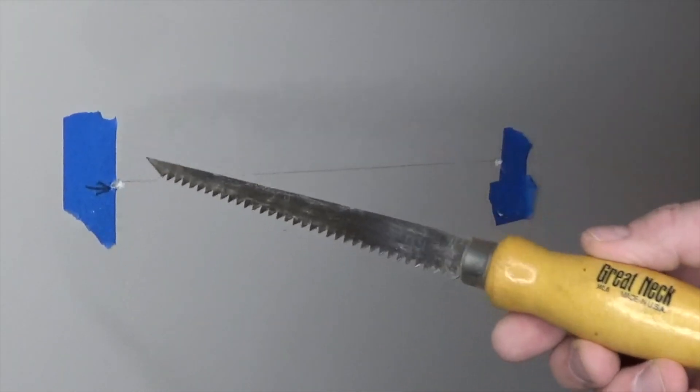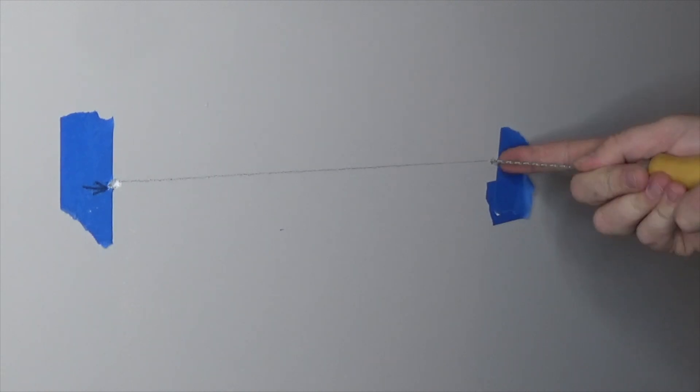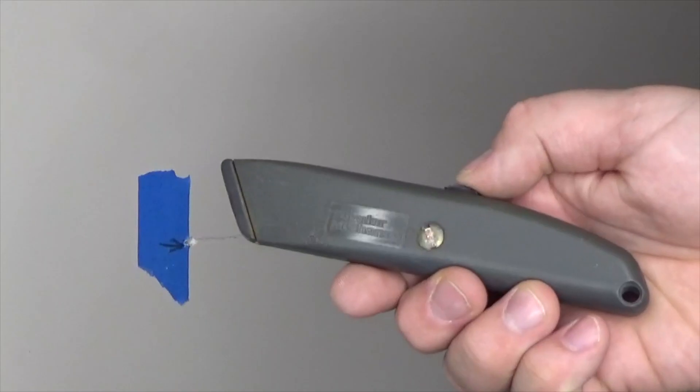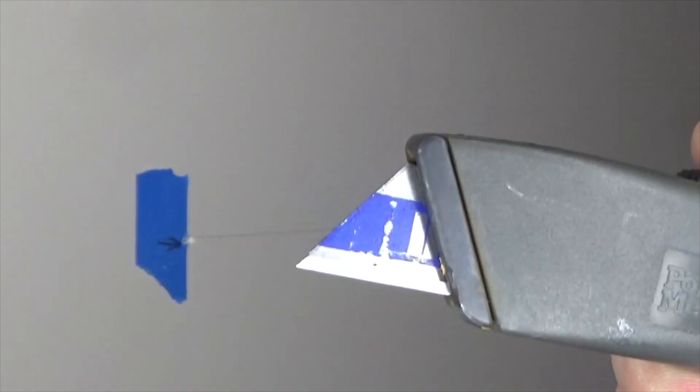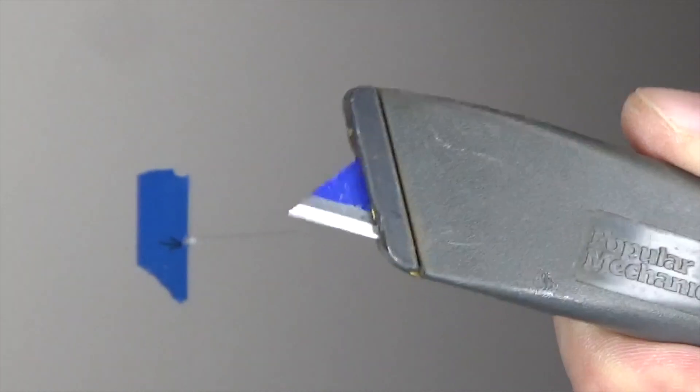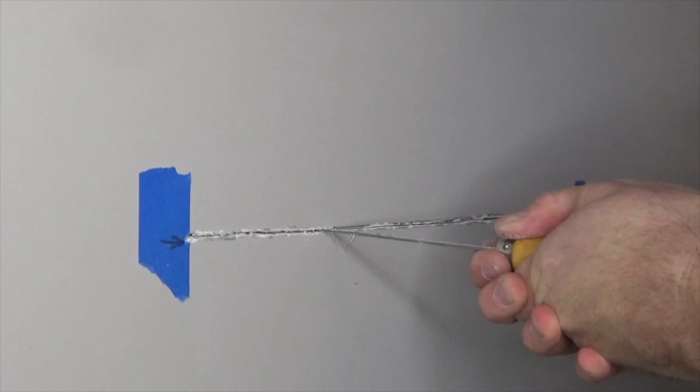I prefer using a drywall saw to make my cut. However, if you're worried about unseen objects in the wall, like pipes or electrical wire, then use a utility knife with a blade extended just deep enough to get through the drywall. Since I actually built this wall, I'm certain of what lies behind it and will use my drywall saw.